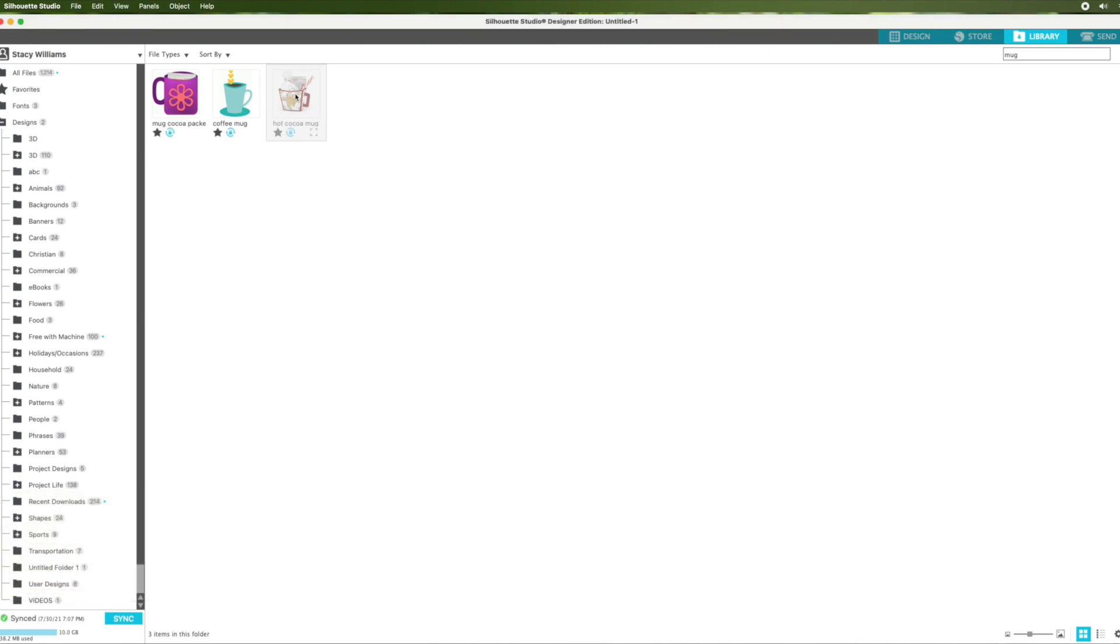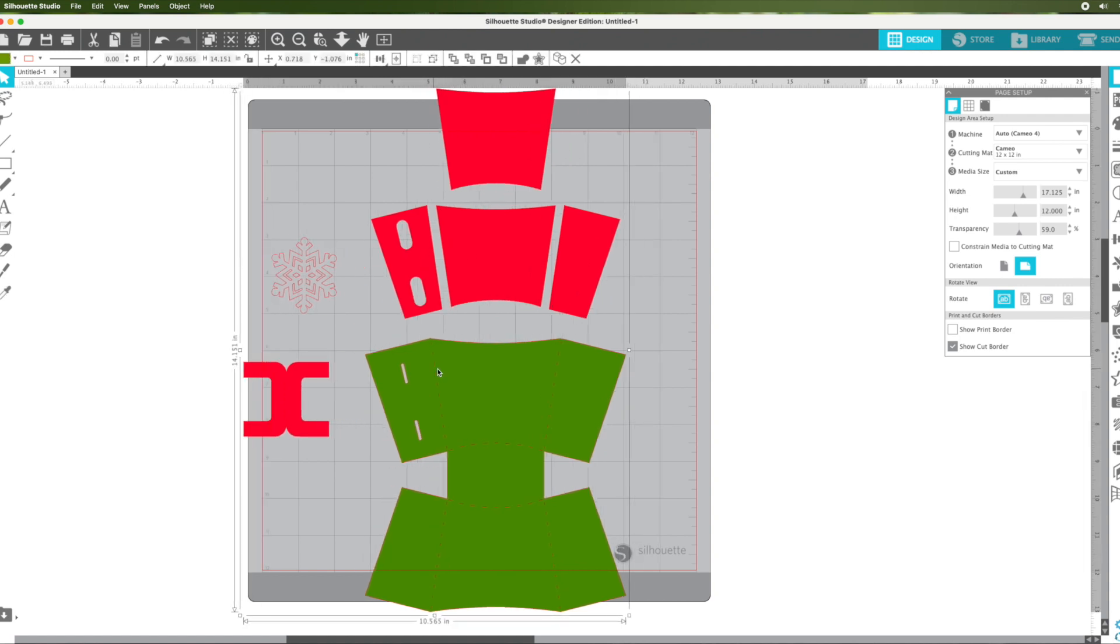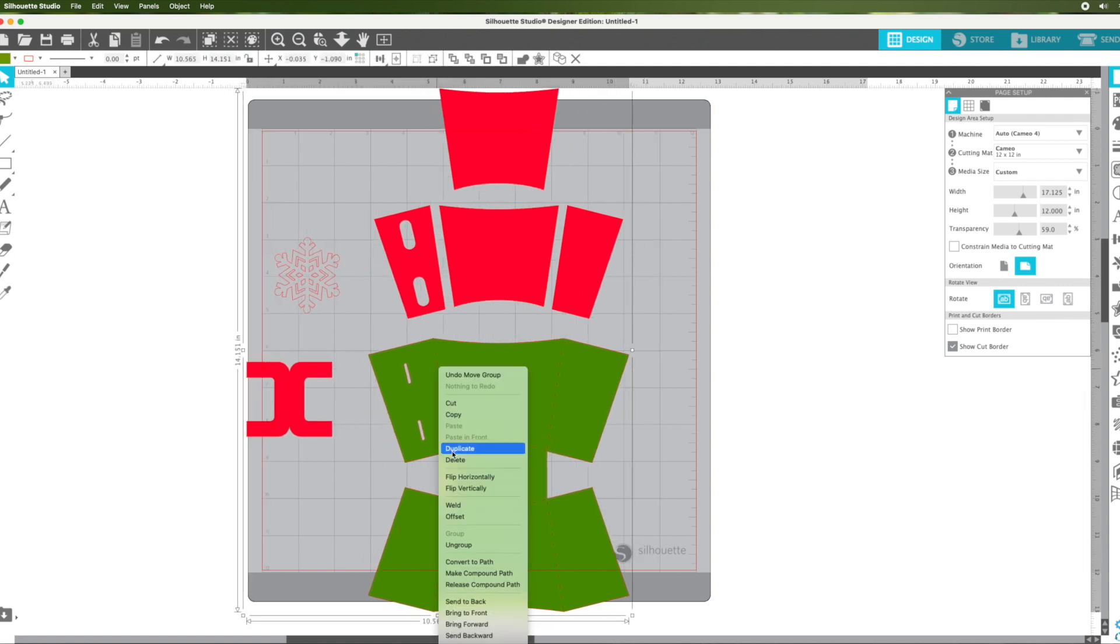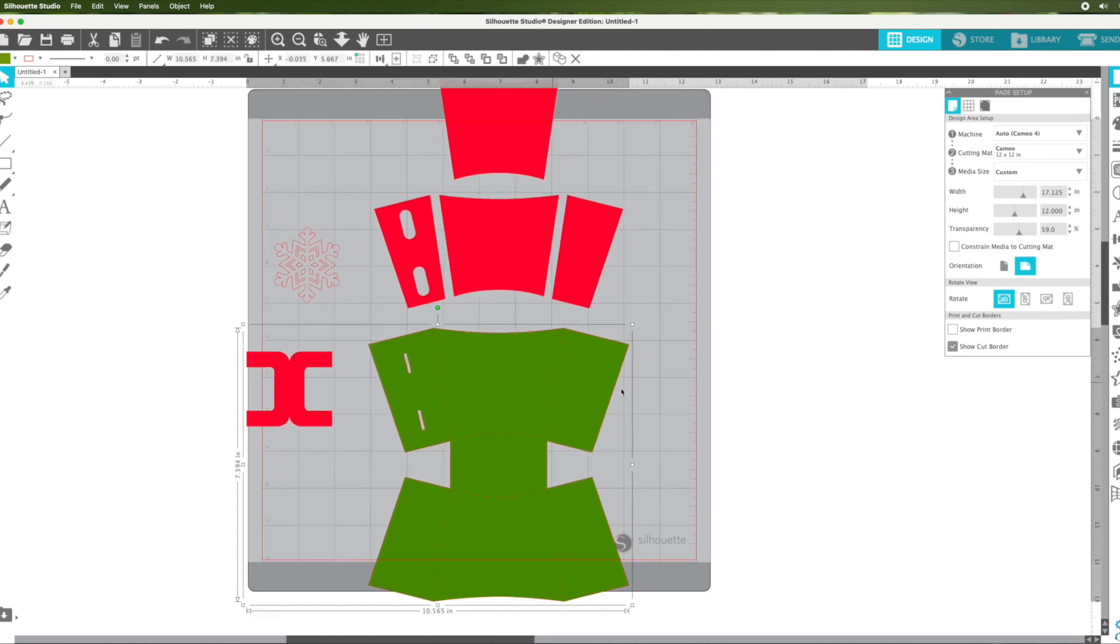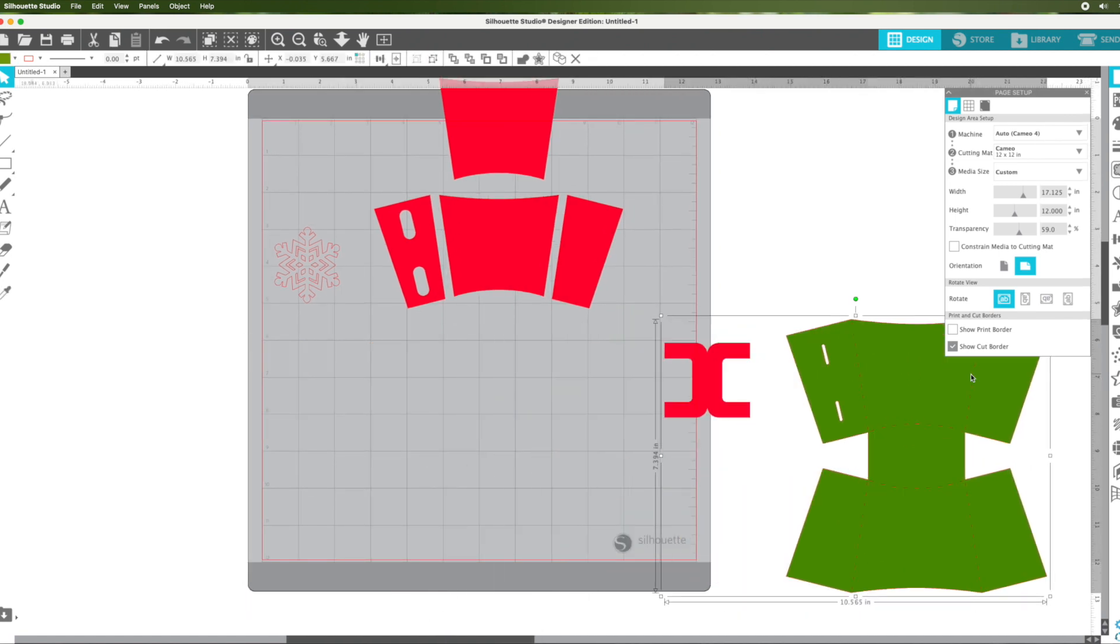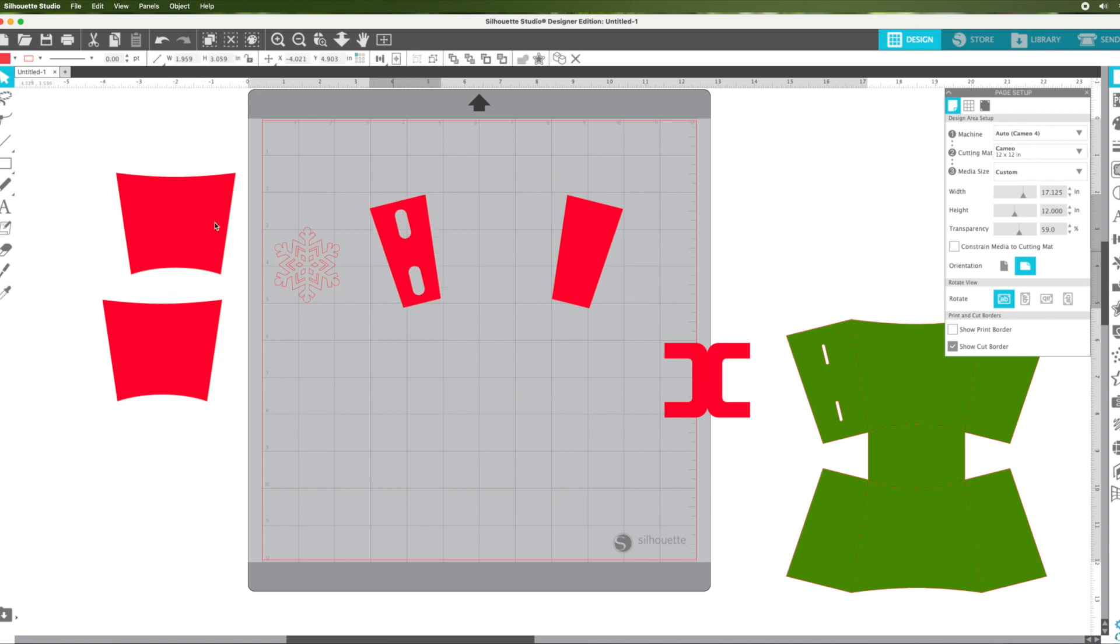Now to bring this to my mat I'm going to double click on the image. Here it is and you can see it does come in all grouped together. All these red pieces here we're going to cut those out in a pattern paper. I'm actually making my own just by stamping on white cardstock.